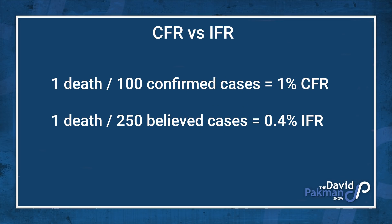That gets us to infection fatality rate. When you look at infection fatality, that's deaths divided by the total believed number of infections. We're not testing everybody — there are people who have had coronavirus who never got a test. So when we have a hundred positive tests, we estimate how many people were really infected. We might determine there's a 2.5 times infection rate, so for every hundred positive tests you estimate you really have 250 believed cases. The infection fatality rate with one death over 250 believed cases is only 0.4%. You can lower your infection fatality rate by arguing there were way more asymptomatic people who had the virus and recovered — if you argue for every positive test there are probably 10 people who had it, you lower your infection fatality rate dramatically.